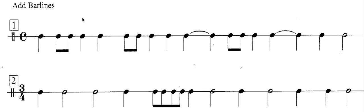We'd like to add bar lines given the time signature and the note values. Notice that there are ties here as well, so we have to take that into account.